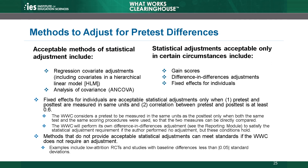Even when the WWC does not consider a statistical adjustment for baseline differences acceptable, these methods — difference-in-differences, gain scores, and fixed effects — are acceptable ways to estimate impacts. For example, a QED that analyzed gain scores when the correlation between the pretest and posttest was only .4 is eligible to be rated meets WWC group design standards with reservations, so long as the baseline effect size does not exceed .05 standard deviations.